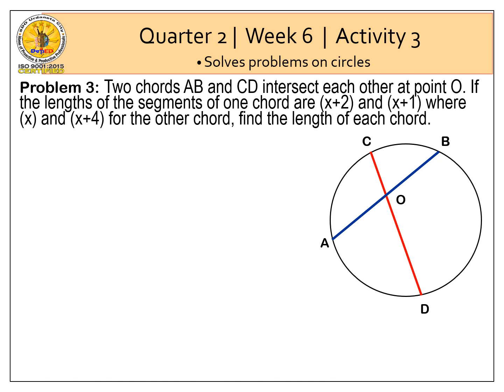Let's have now problem number 3. Two chords AB and CD intersect each other at point O. If the lengths of the segments of one chord are X plus 2 and X plus 1, where X and X plus 4 for the other chord, find the length of each chord. So in the figure, we have chord AB and chord CD intersecting at point O.